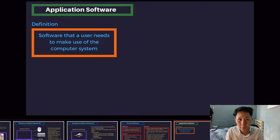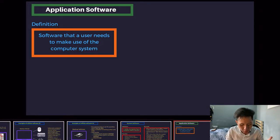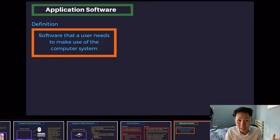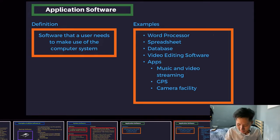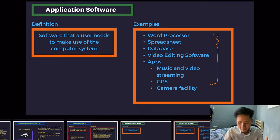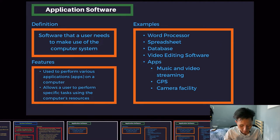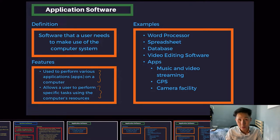The second type of software is application software, defined as software that a user needs to make use of the computer system. Even if your computer doesn't have this software, it's okay, because these software usually only serve a very specific purpose. Examples include your word processor, spreadsheet, database, apps, and even Google Chrome or Safari — they are all application software, developed to achieve a single purpose. Even games are a type of application software.